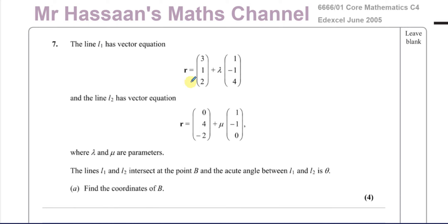The line L1 has vector equation R = (3, 1, 2) + λ(1, −1, 4), and line L2 has vector equation R = (0, 4, −2) + μ(1, −1, 0), where λ and μ are parameters. The lines L1 and L2 intersect at point B, and the acute angle between them is θ. We need to find the coordinates of B. I'll do some groundwork for students who haven't studied this topic properly.